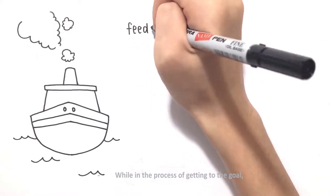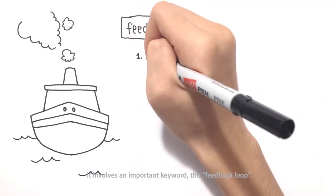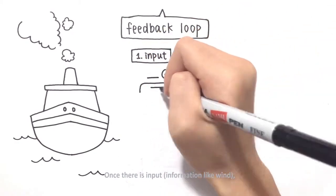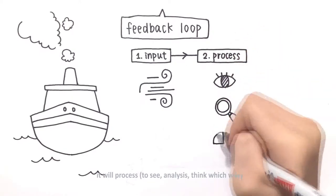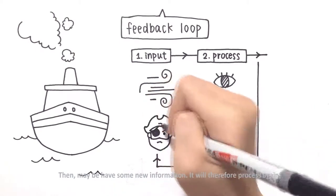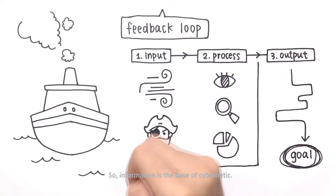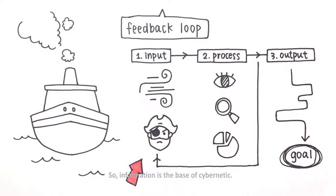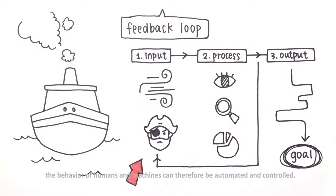While in the process of getting to the goal, it involves an important keyword: the feedback loop. Once there is input — information like the wind — it will process to see, analyze and think. Then, with some new information, it will process again and finally have an output: the correct way to go to the goal. So we can say that information is the base of cybernetics. Cybernetics uses the feedback loop to control the flow of information, and the behavior of humans and machines can therefore be automated and controlled.